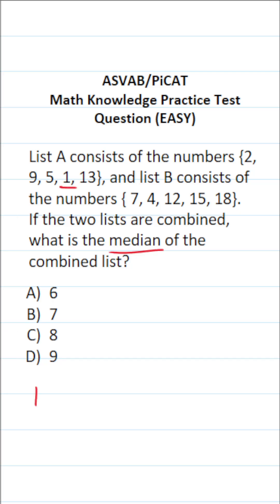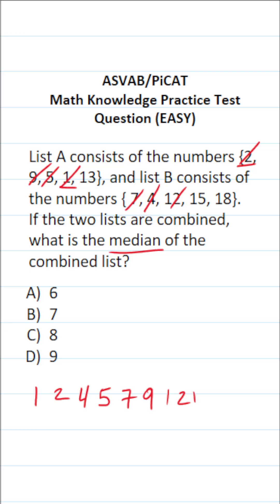The smallest number is 1. After that, we have 2, then 4. As I create my combined list of numbers from least to greatest, I'm crossing them out to make sure I've covered all of them. Next we have 5, then 7, then 9, then 12, then 13, 15, and 18.